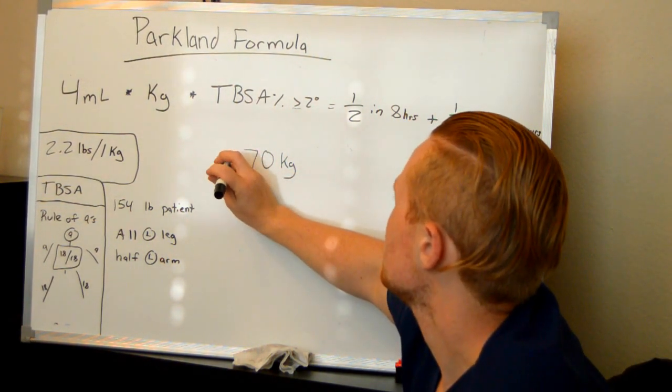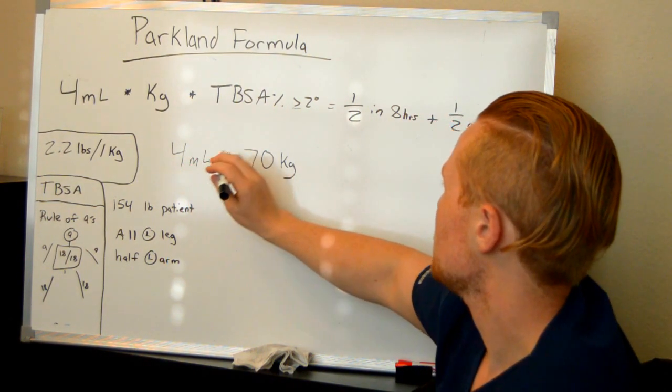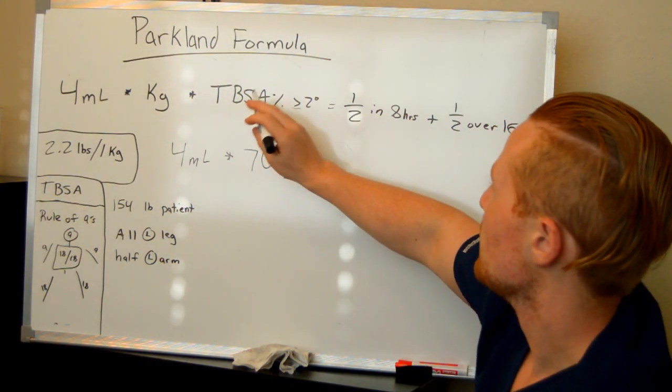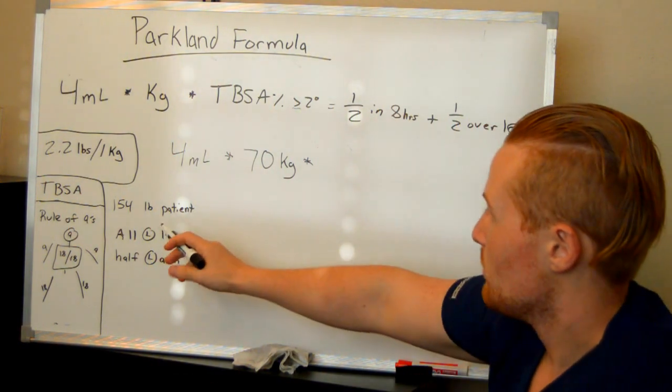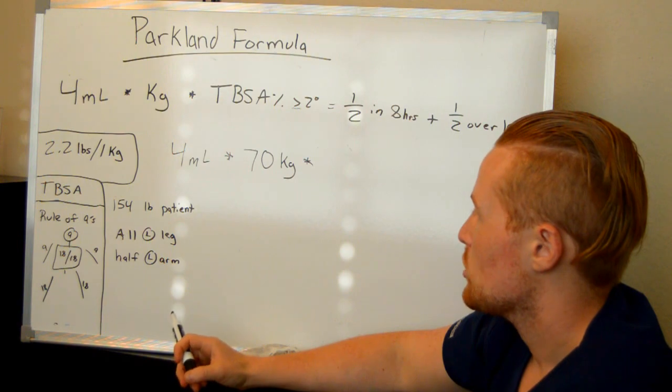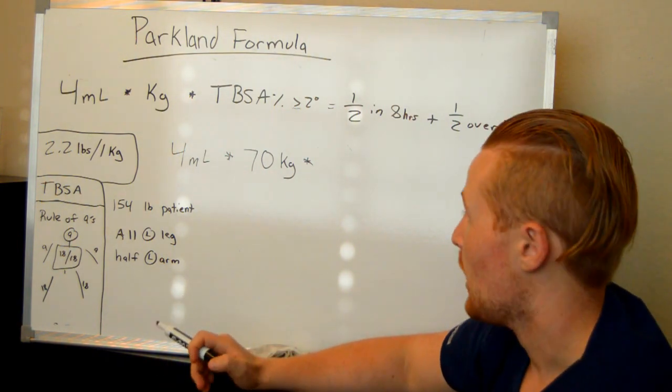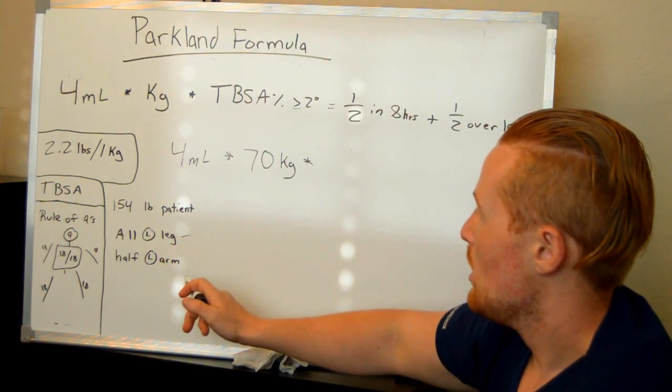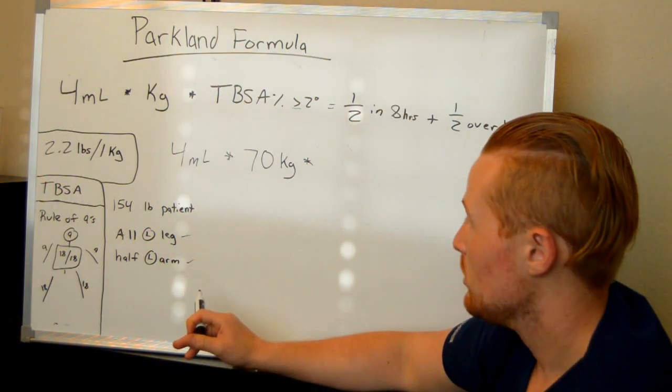You see the front part always stays the same here, that's 4 milliliters. So we got 4 milliliters times 70 kilograms times, let's figure out what the total body surface area is, of greater than second degree burns. So this patient, the 154 pound patient, they were trying to start the lawn mower and it exploded on them, gas got on their body and they lit on fire. All of their left leg is burned with greater than second degree burns, and half of their left arm has greater than second degree burns.